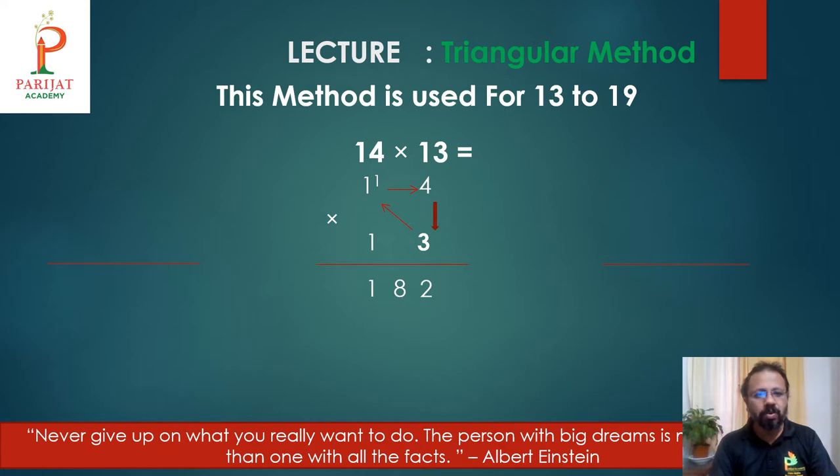So, first digit 1 will remain as it is. Answer is 182. We have solved this multiplication without table of 13. Only by using table of 3, we can easily solve this multiplication in single line. That's great. We will go with one another.